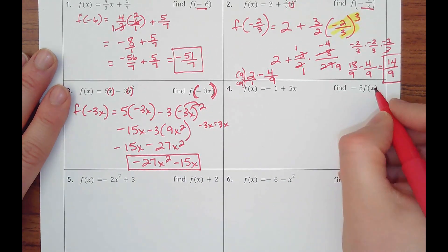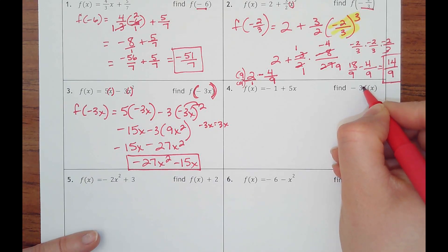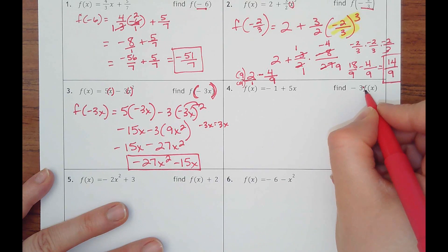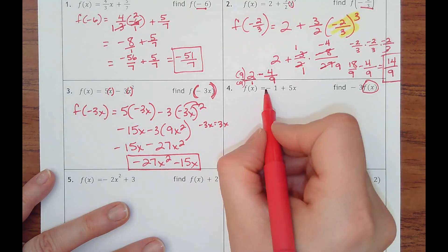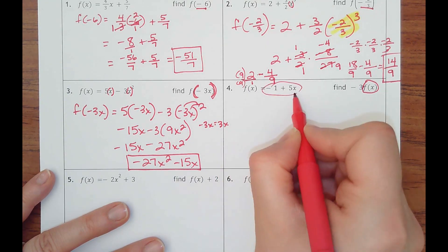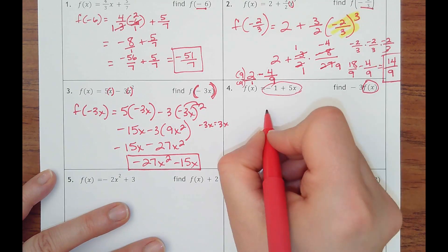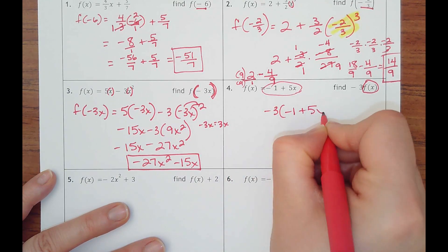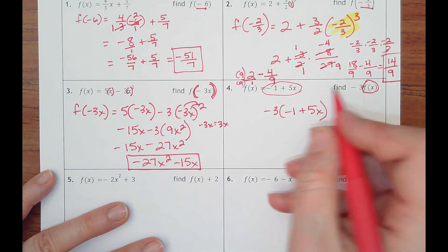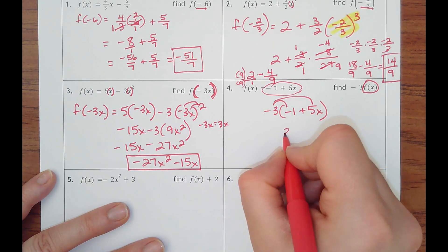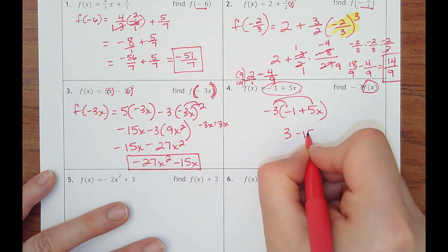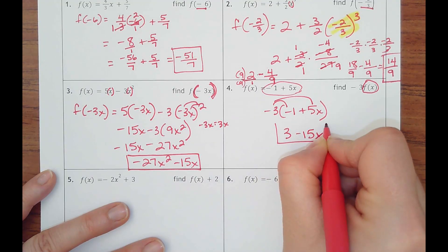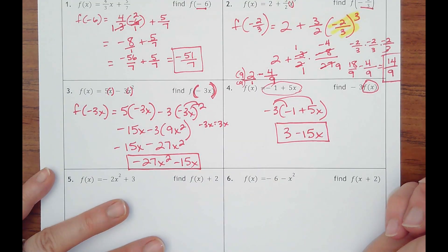Number four, notice how this is a negative three times the entire f of x function. And so it's like replacing f of x with what f of x equals. So all I'm doing is taking negative three times this entire function. So that would distribute to become three minus 15 x.